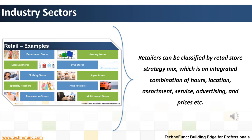Some retail stores are called superstores — very large supermarkets or shops selling household goods and equipment. We also have auto retailers: a car dealership is a business that sells new or used cars at the retail level. Last are multi-channel stores, an e-commerce selling strategy that targets customers on various channels including a company's website.